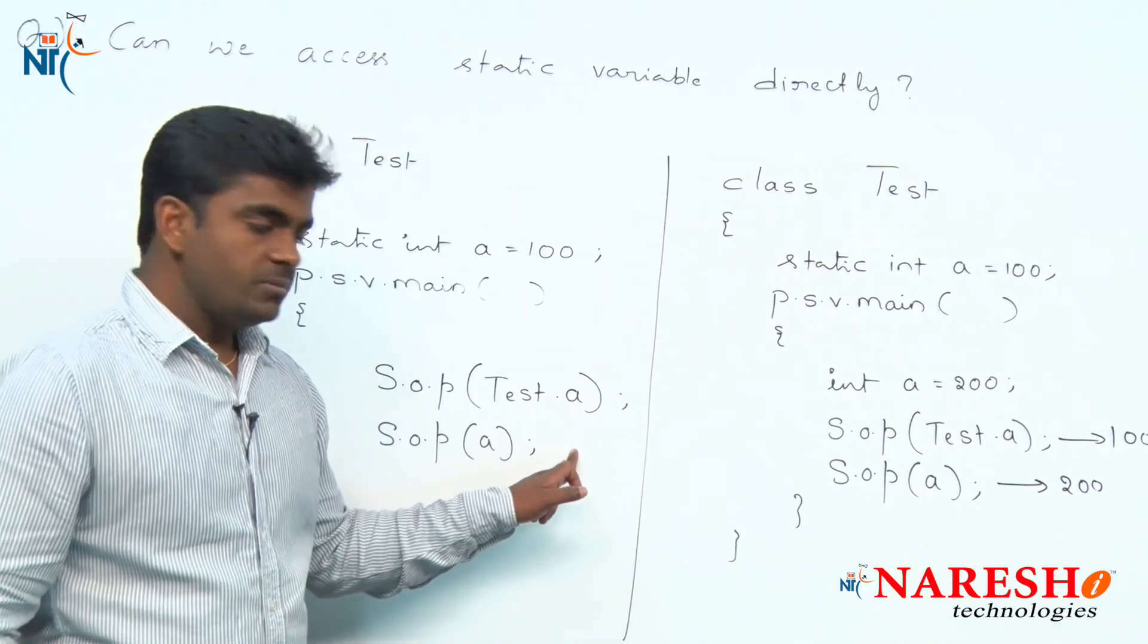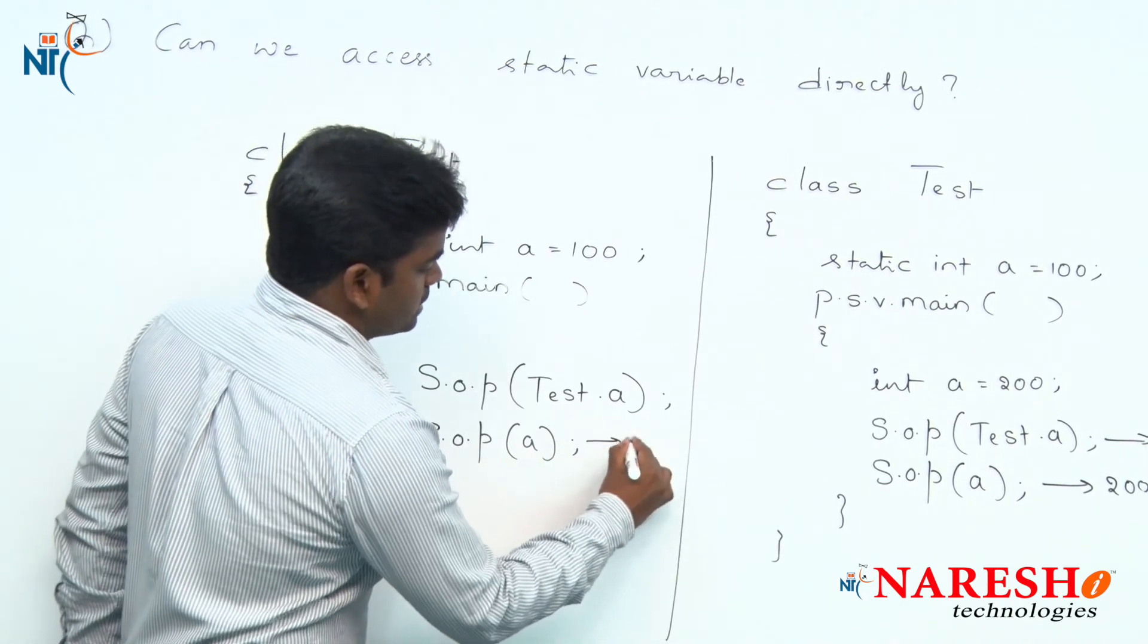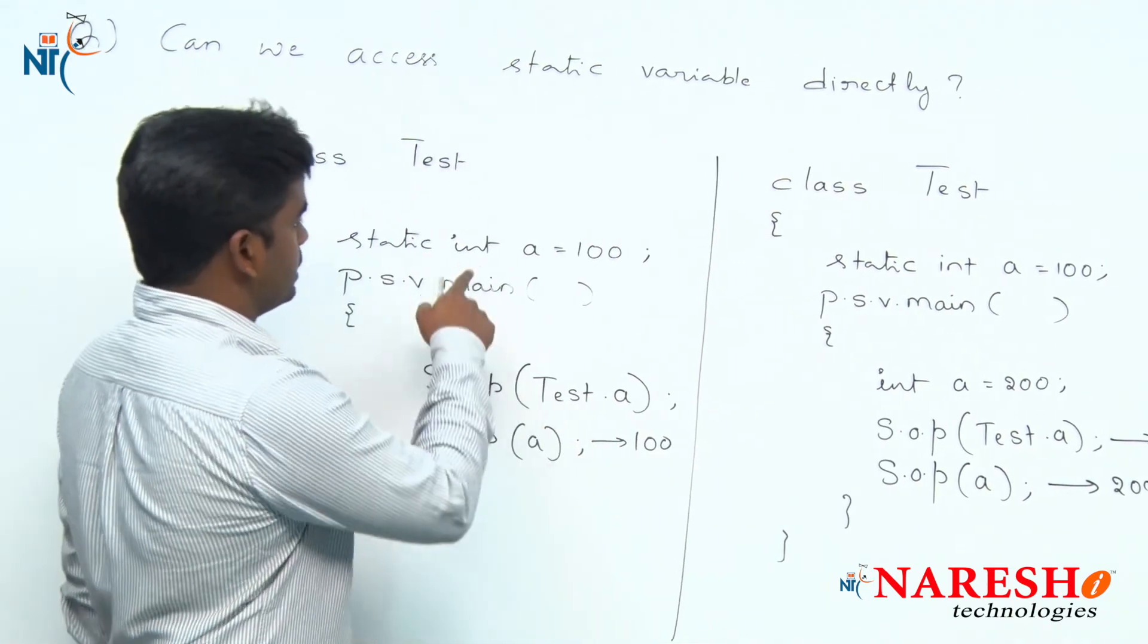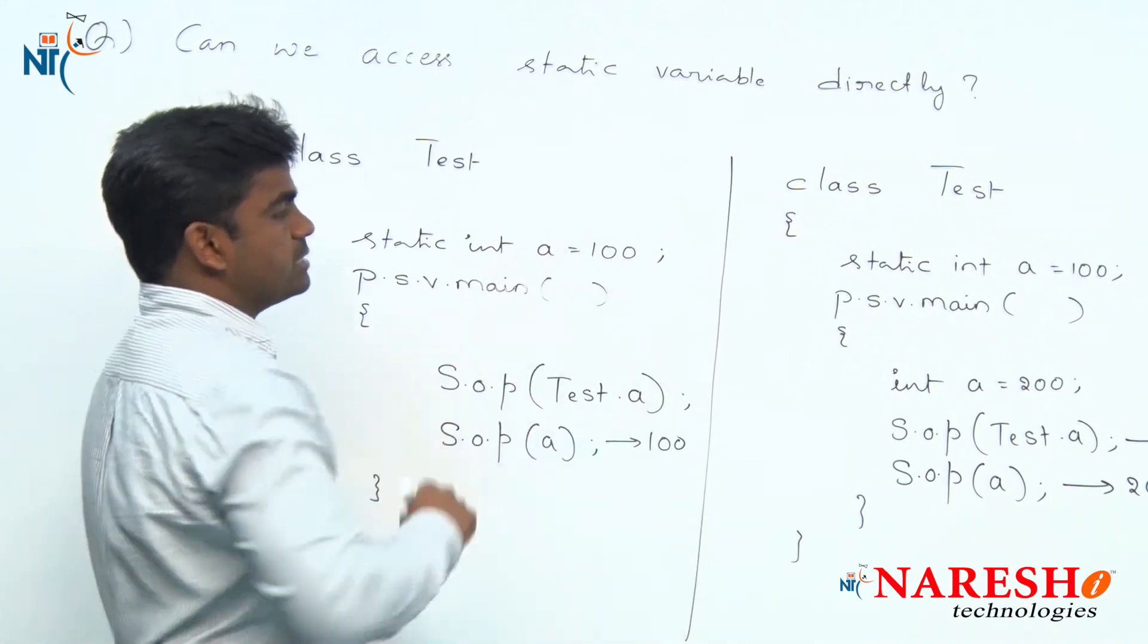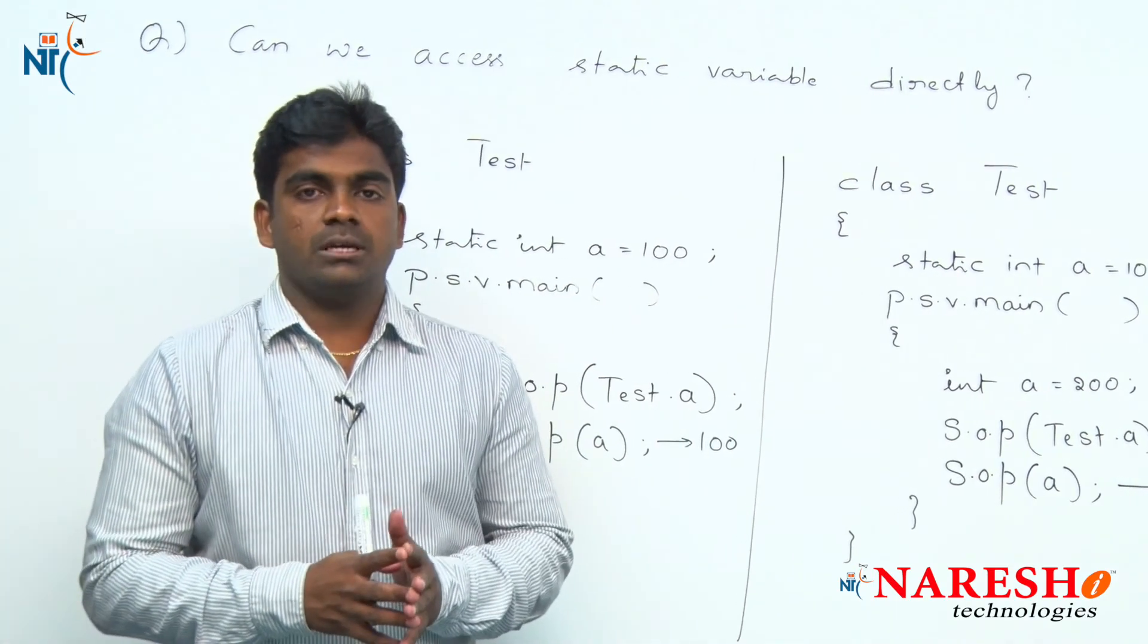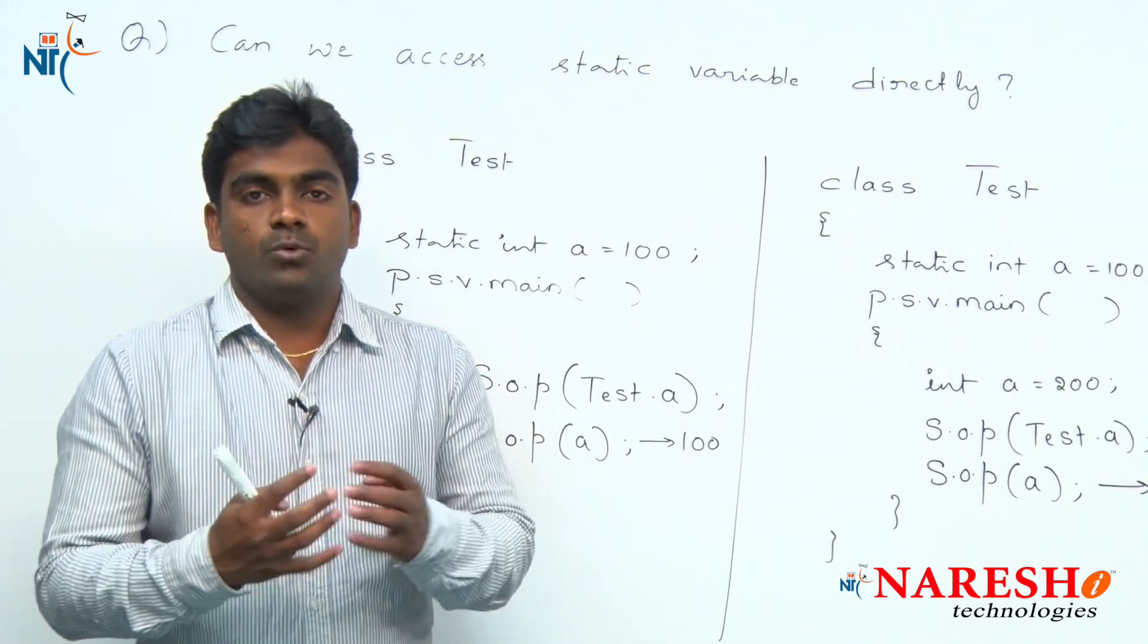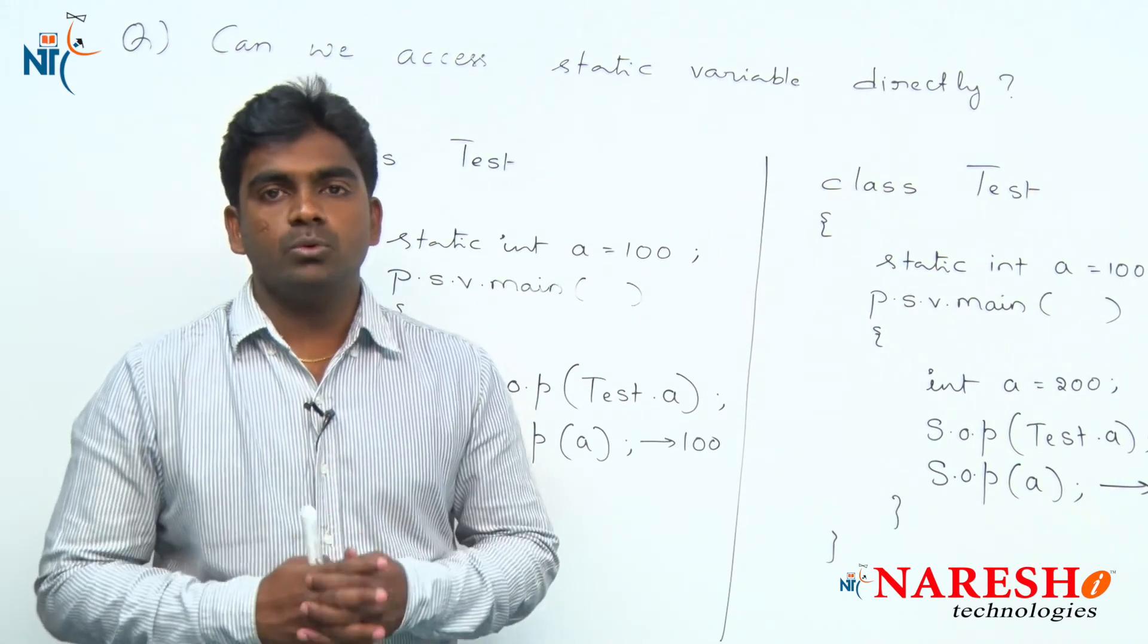But in the first case, whenever we are looking for 'a' as local variable is not present, it will give the static variable - that is 100 only. So in all situations, it will not give the result that you expected if you violate the rules.